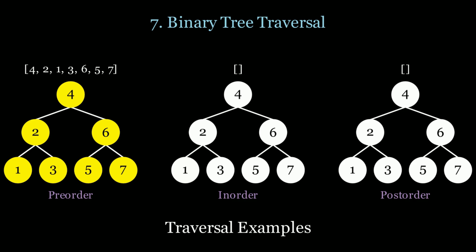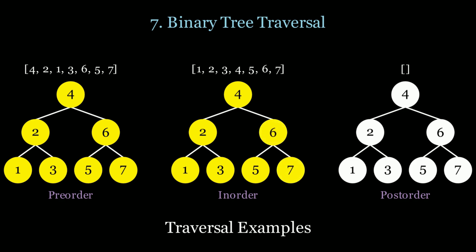In the in-order traversal, you explore the left child, then the current node, and then the right child. That's going to look like 1, 2, 3, 4, 5, 6, and 7. In the post-order traversal, you explore the children nodes first. So that's going to be 1, 3, 2, 5, 7, 6, and finally 4.